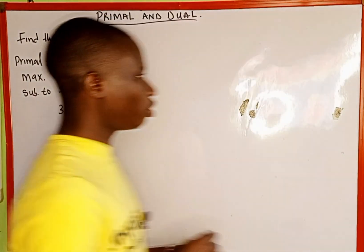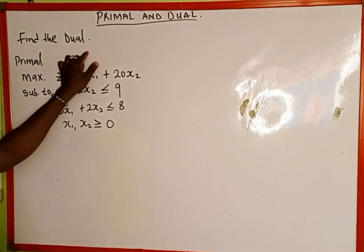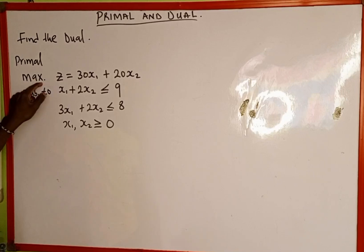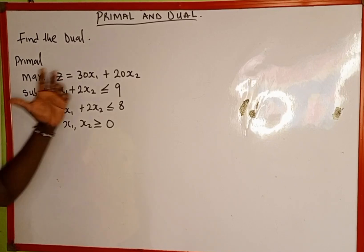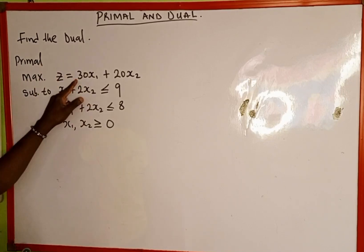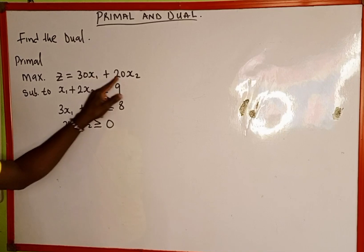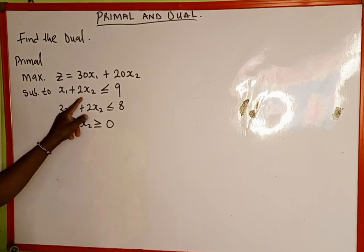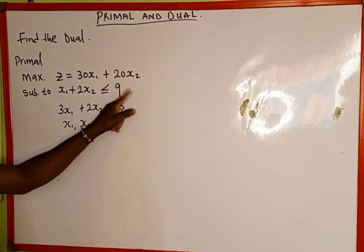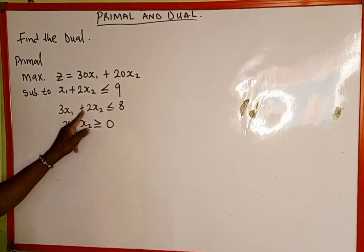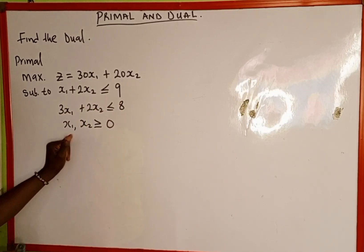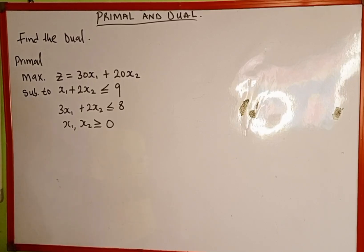If you look at this question on the board, we are asked to find the dual or duality. The primal given is: maximize Z, which is the objective function, 30x1 plus 20x2, subject to x1 plus 2x2 less than or equal to 9, then 3x1 plus 2x2 less than or equal to 8, and x1, x2 greater than or equal to 0.